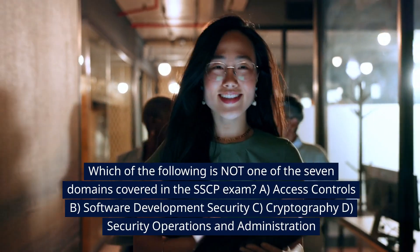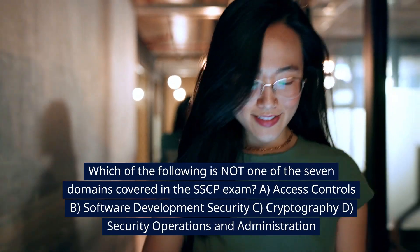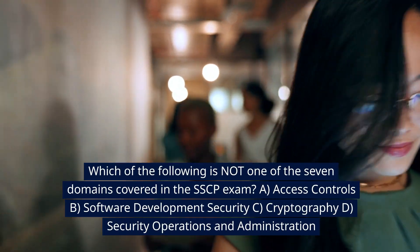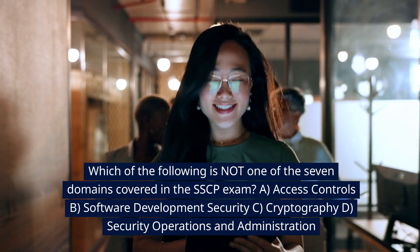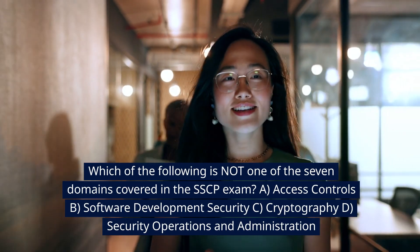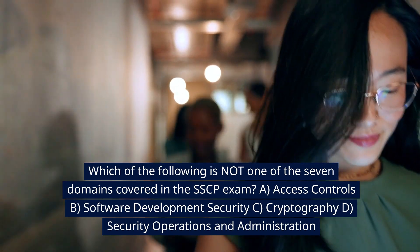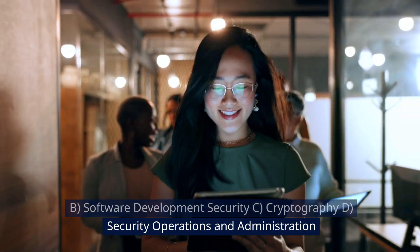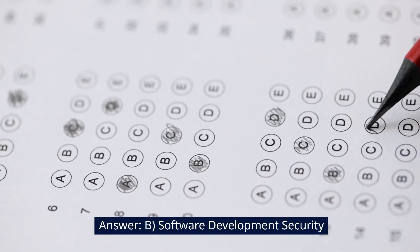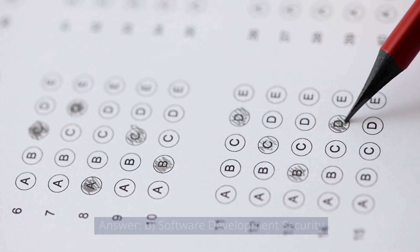Which of the following is not one of the seven domains covered in the SSCP exam? A. Access Controls. B. Software Development Security. C. Cryptography. D. Security Operations and Administration. Answer: B. Software Development Security.